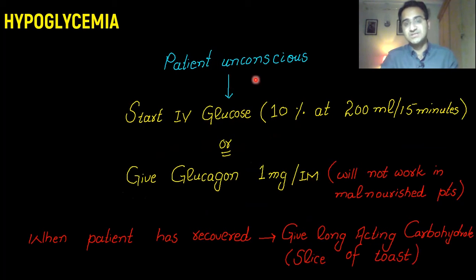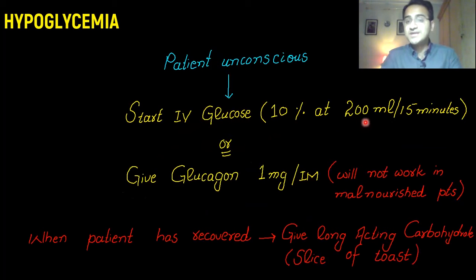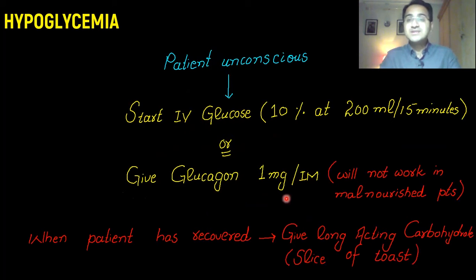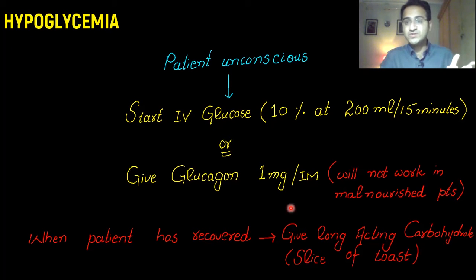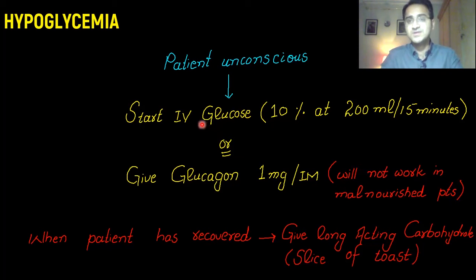In an unconscious patient you start IV treatment: IV glucose 10% at a rate of 200 ml per 15 minutes. Alternatively, you can give glucagon 1 milligram IM, but remember that glucagon will not work in malnourished patients. Glucagon extracts glucose from the body's glucose stores, and malnourished people have low glucose stores, so in such patients you need to give IV glucose.